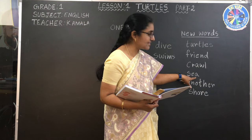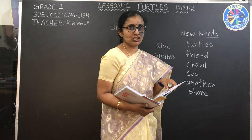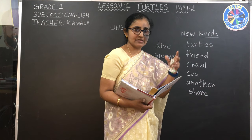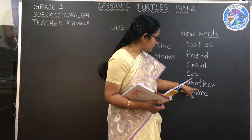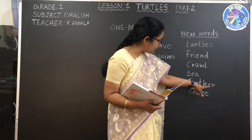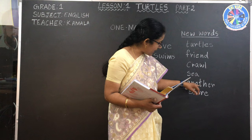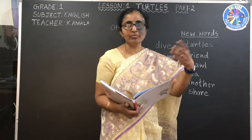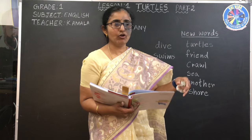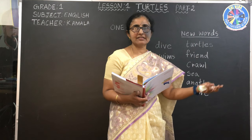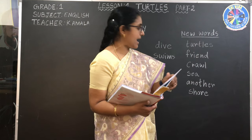Next is 'sea.' Sea means a big water body — like a beach. You see the beach, the sea — that is sea, ocean. Next one is 'another.' Another means one more. If we are talking about something else, we say another.